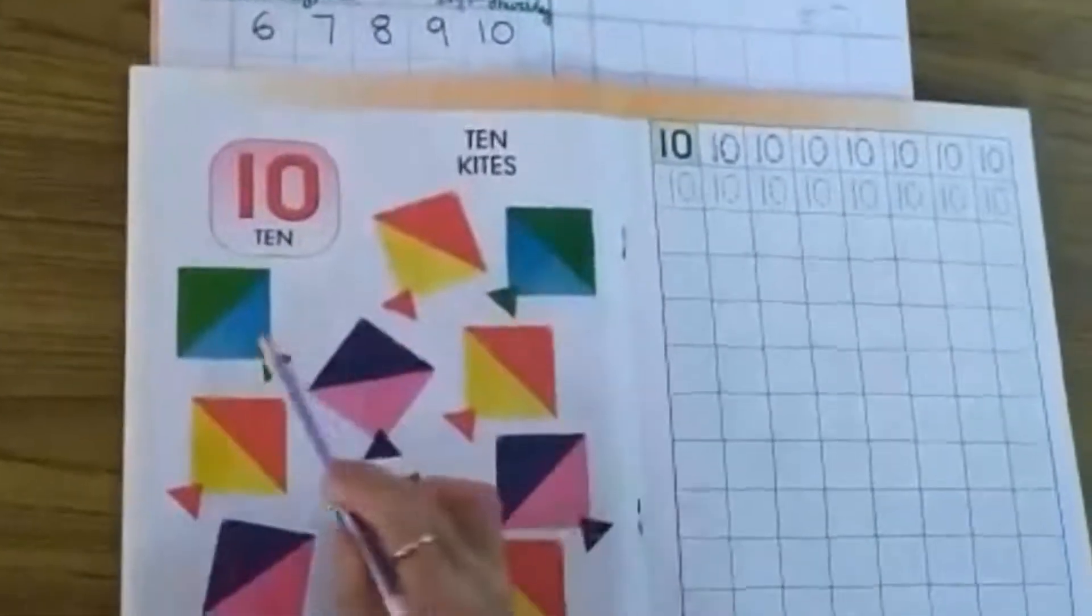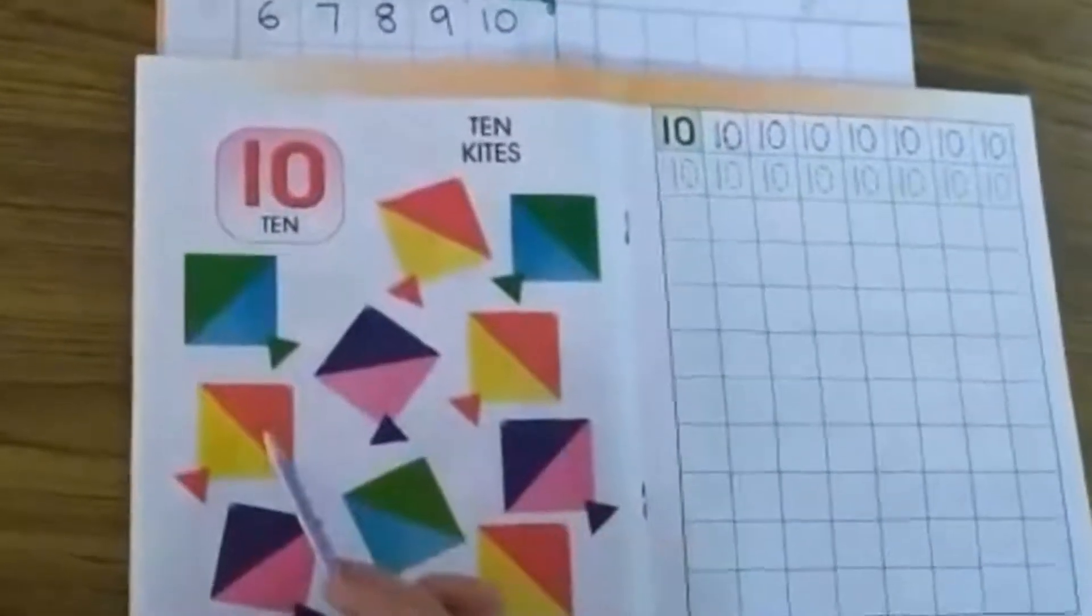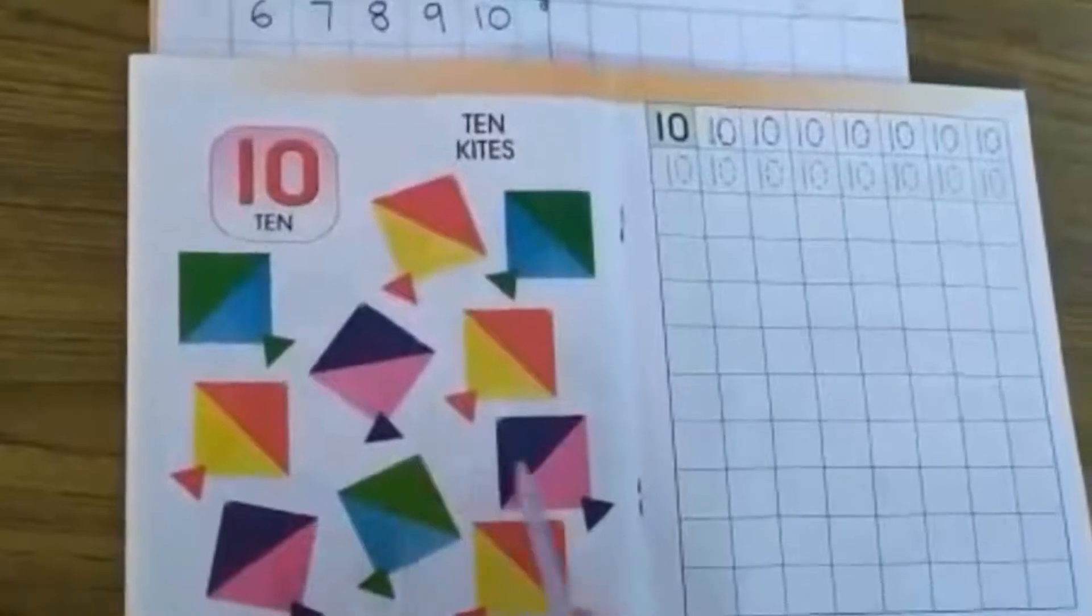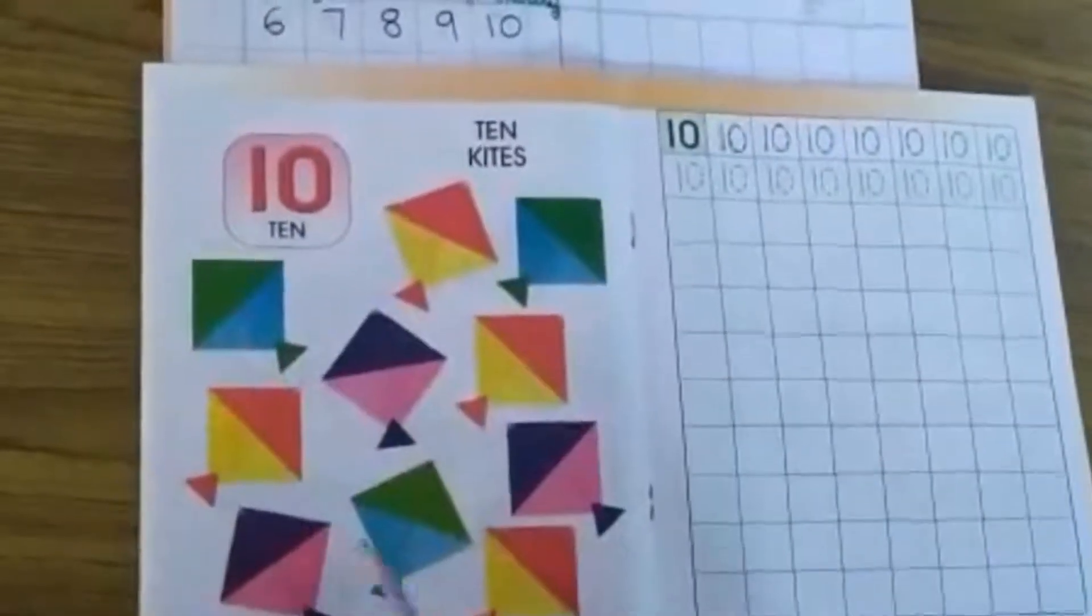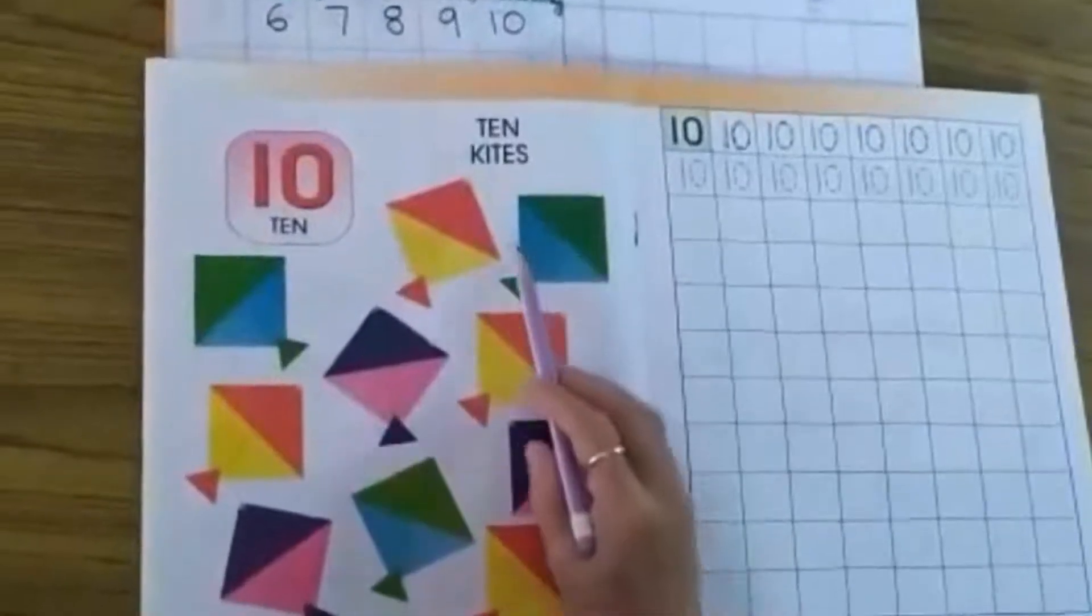1, 2, 3, 4, 5, 6, 7, 8, 9, 10. Here 10 kites. How many kites are here? Here 10 kites.